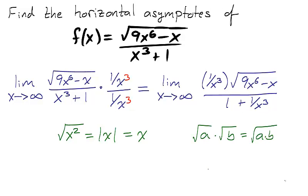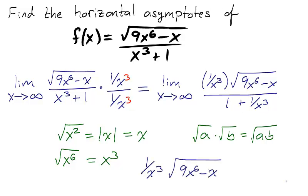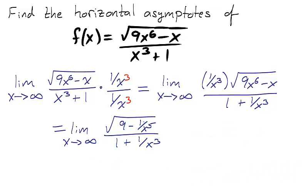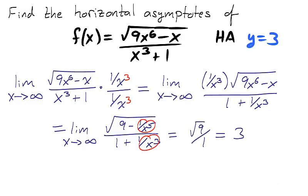Keep in mind that the square root function is multiplicative — that is, the square root of a times the square root of b is equal to the square root of a times b — which tells us that the square root of x to the sixth is equal to x cubed. Therefore, the numerator of our expression can be rewritten, and 1 over x to the sixth can be distributed through the interior of the square root. The expressions in red approach 0 as x approaches infinity, so the limit as x approaches infinity of f(x) is 3. Therefore, we found the first horizontal asymptote y = 3.